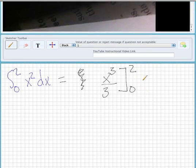So what we want to do is plug in 2 right here. We'll plug 2 into x and then subtract that and plug 0, or we'll subtract when we plug 0 into it.